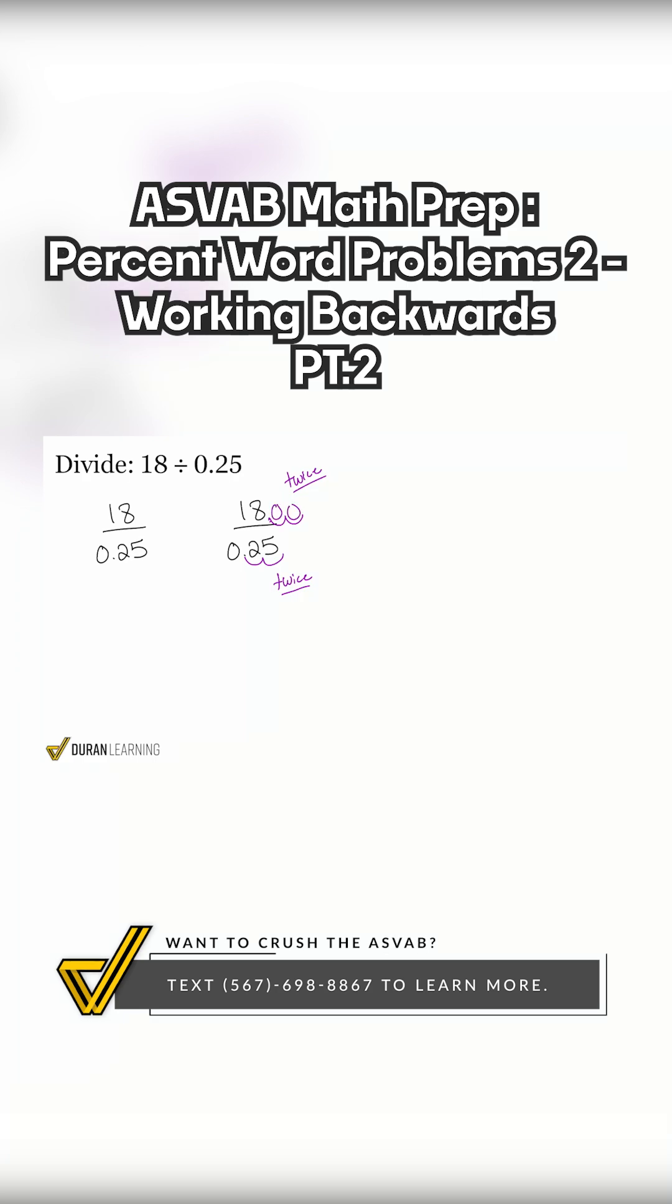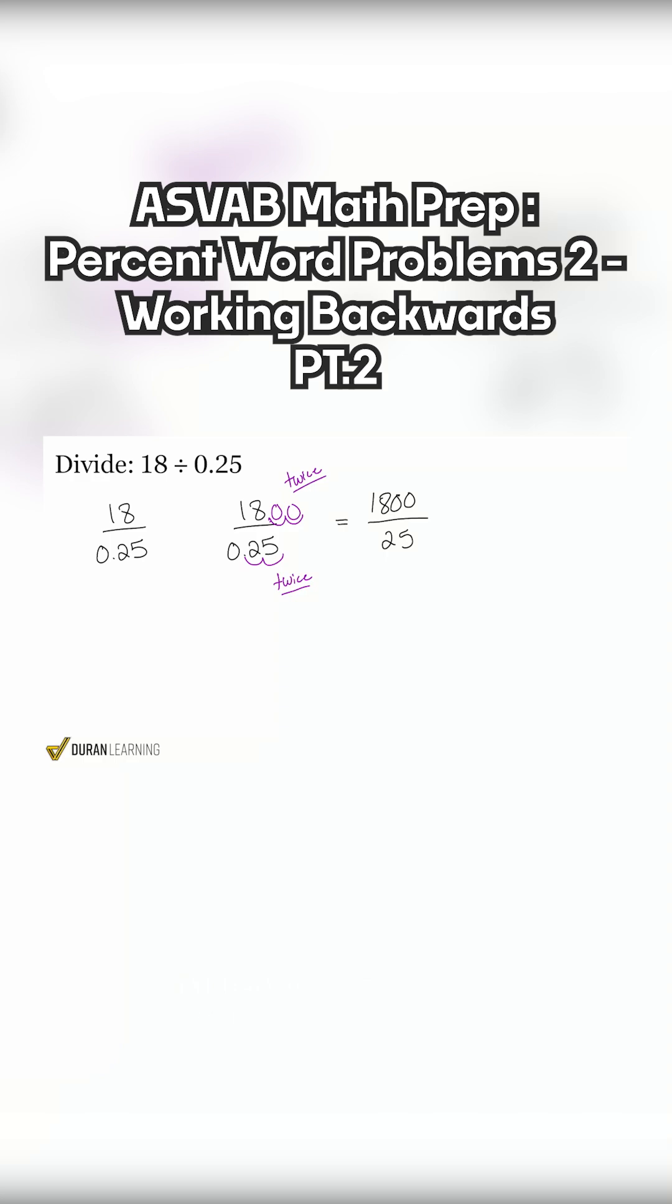So what we essentially have, everybody, is 18 over 0.25 is the same thing as 1800 divided by 25. That's what the math says. That's what your rules of fractions tells you. That's what makes this so much easier than thinking about that decimal.